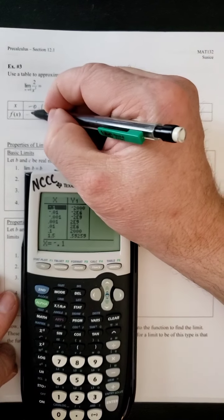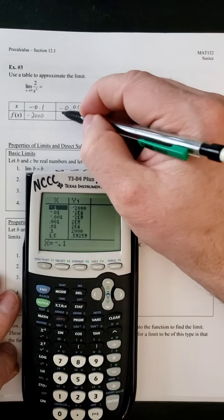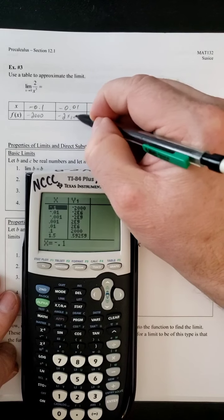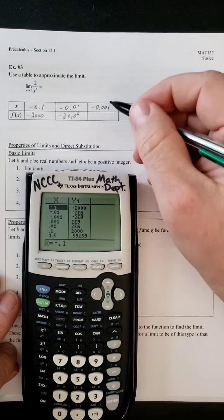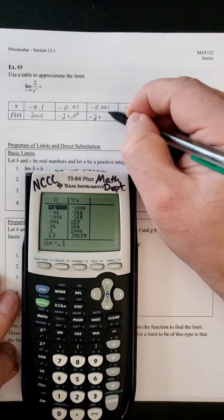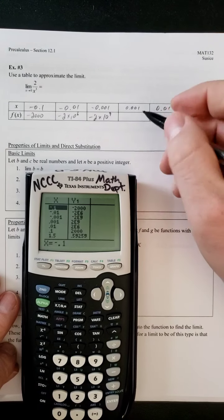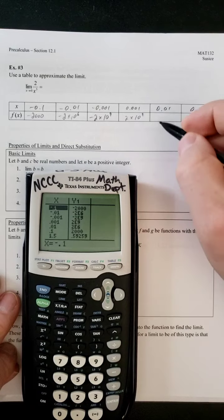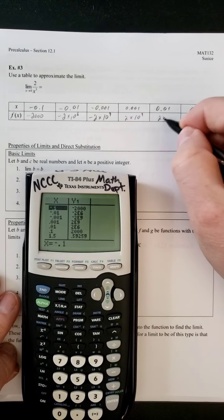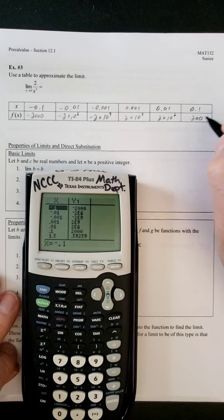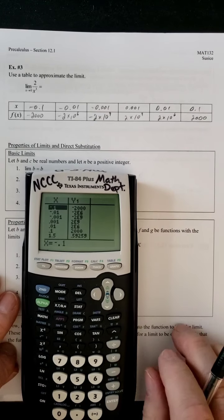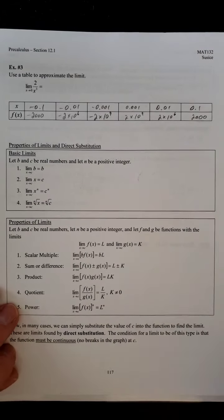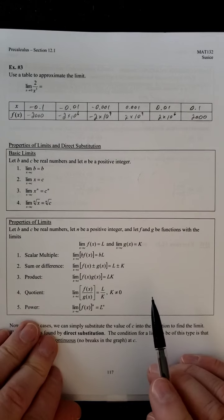So let's write those down. So we've got negative 2,000. Negative 2 times 10 to the 6. Negative 2 times 10 to the 9th. 2 times 10 to the 9th. 2 times 10 to the 6. And 2,000.